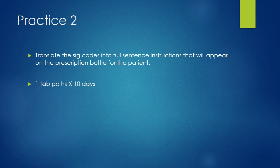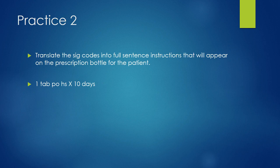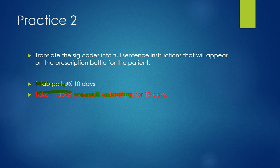Next, translate the sig codes into full sentence instructions: one TAB PO HS X 10 days. Pause and take some time to answer. Did you get: take one tablet by mouth at bedtime for 10 days? One TAB is represented as take one tablet, PO as by mouth, HS as at bedtime, and X 10 days as for 10 days.